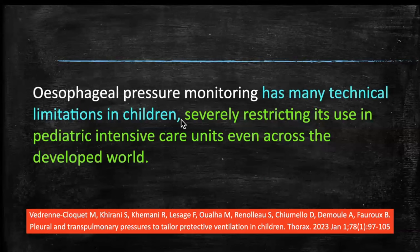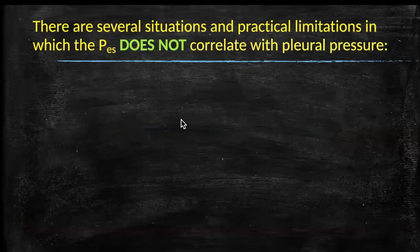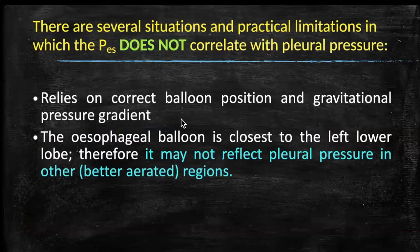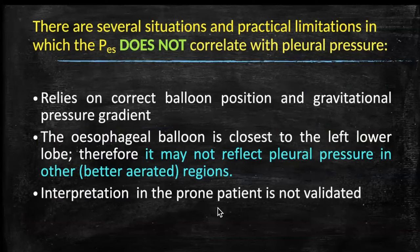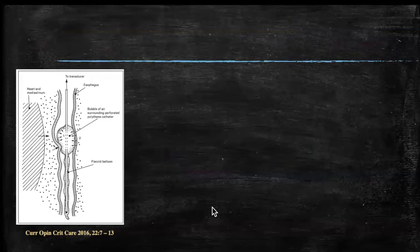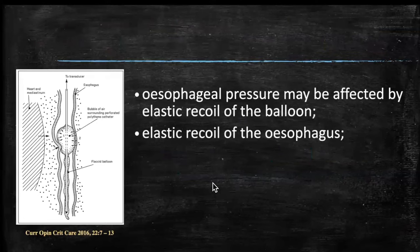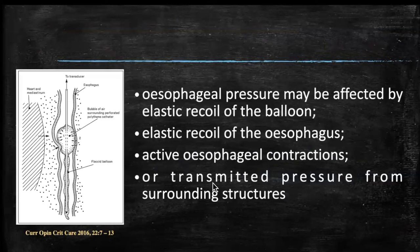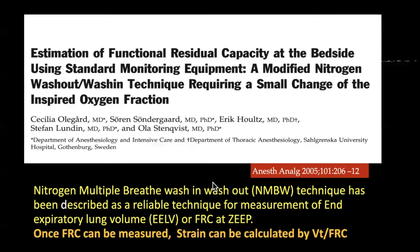Esophageal pressure monitoring has many technical limitations in children, severely restricting its use in pediatric ICUs even in developed countries. It relies on correct balloon positioning, and because the esophageal balloon is closest to the lower lobe of the lung, it may not reflect pleural pressure in other regions. Interpretation in prone position is not validated. It can also be affected by elastic recoil of the balloon, esophageal contractions, or pressure transmitted from surrounding structures.